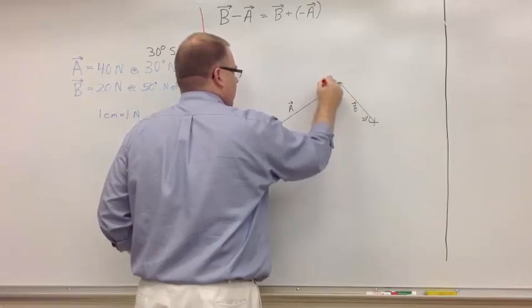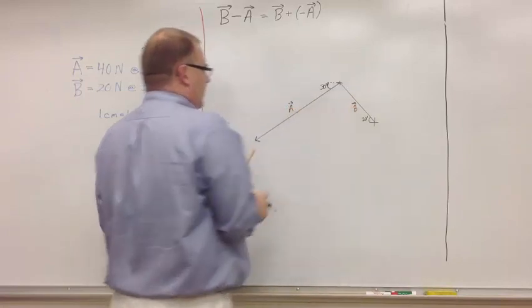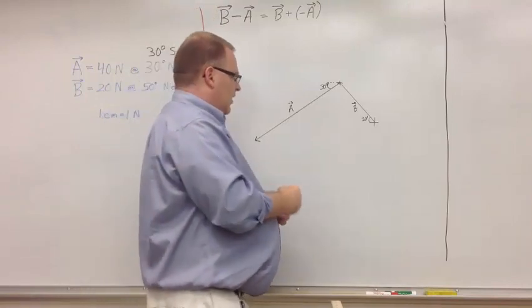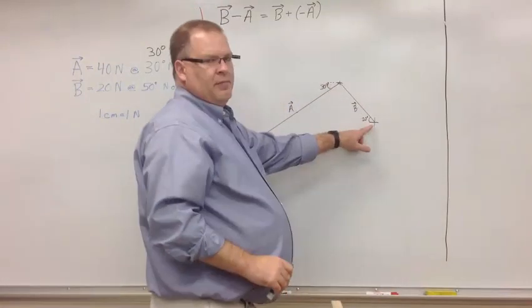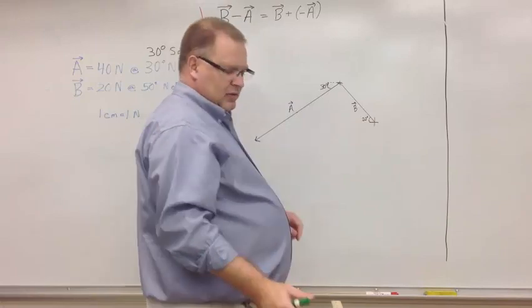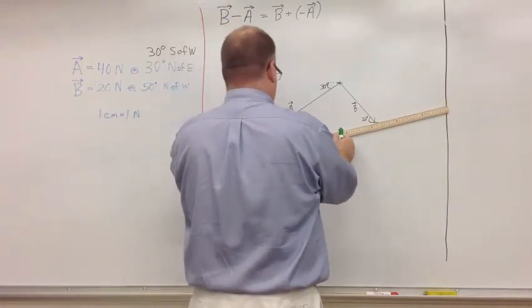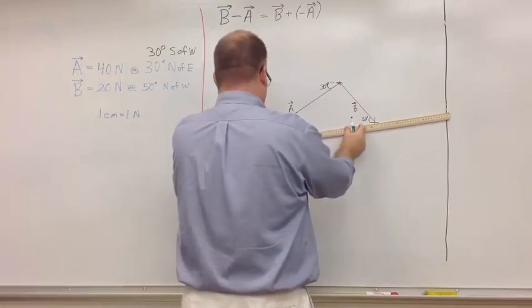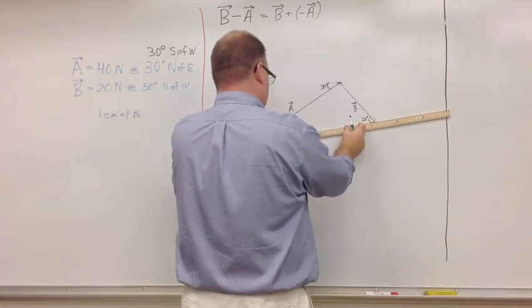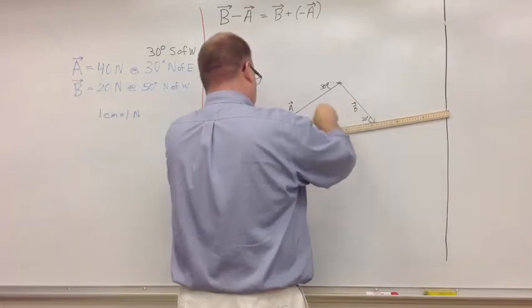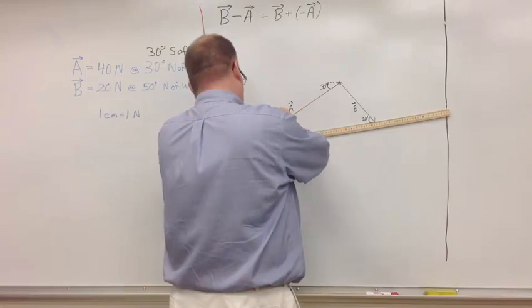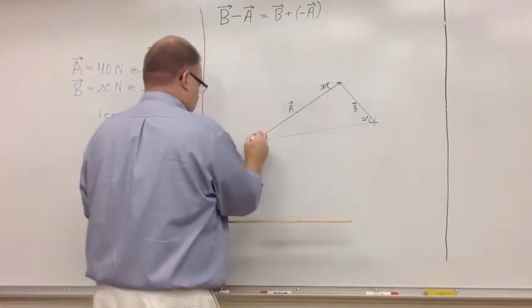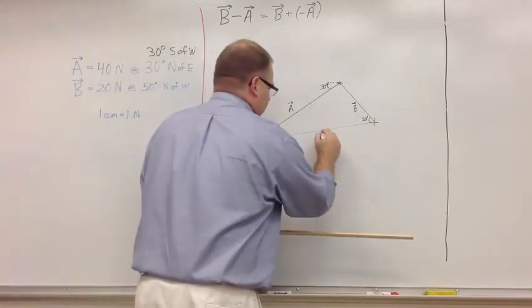There's my 30 degrees. Vector A, vector B, 20 degrees. And again, I have a resultant. And my resultant is from the origin of the first vector to the end of the second vector. And that's my resultant.